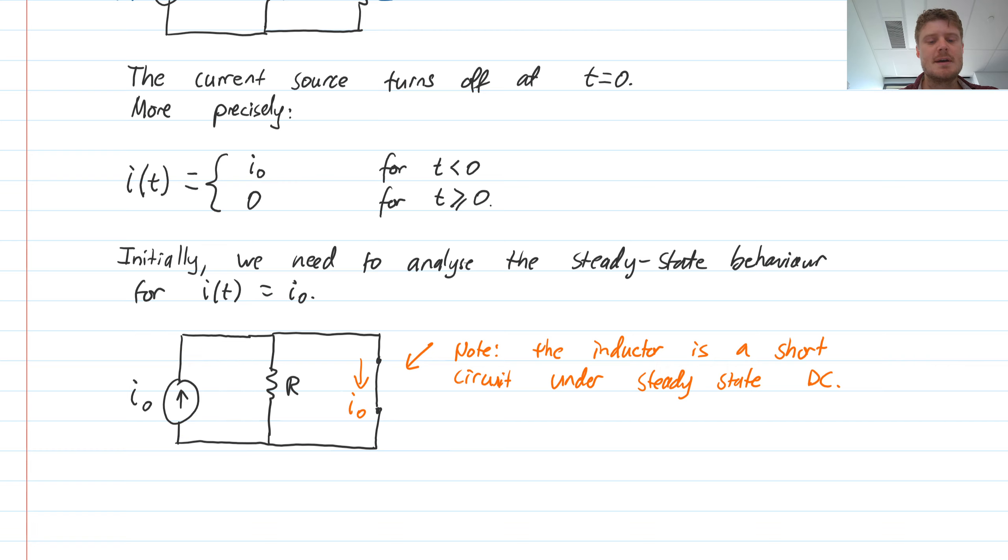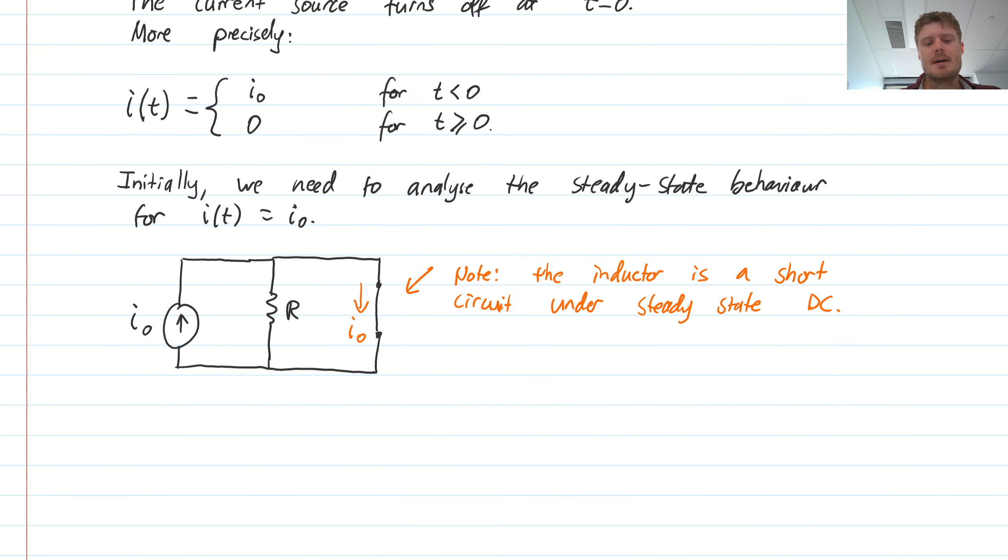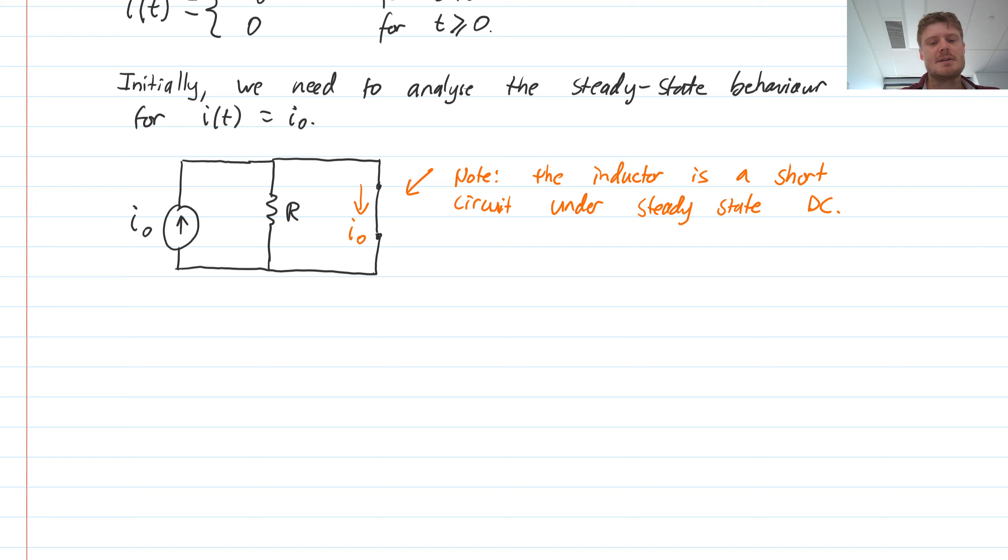The current that is supplied by this source will obviously flow through the short. And none of it will flow through the resistor. We'll take the path of least resistance. This is zero ohms resistance, so it will flow through there. So we know that the initial current in the inductor is the same as the current from the source. If you had a more complicated circuit, you need to actually do some analysis here. But in this case, it's really simple, so we just read it off directly.